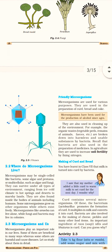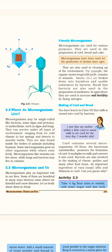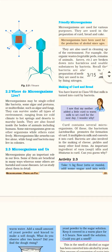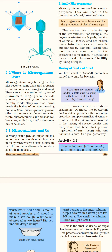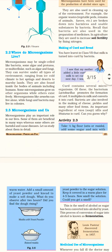Next: where do microorganisms live? Microorganisms may be single-celled like bacteria, some algae, and protozoa, or multi-cellular such as algae and fungi. They can survive under all types of environments, ranging from ice-cold climates to hot springs, and from deserts to marshy lands.